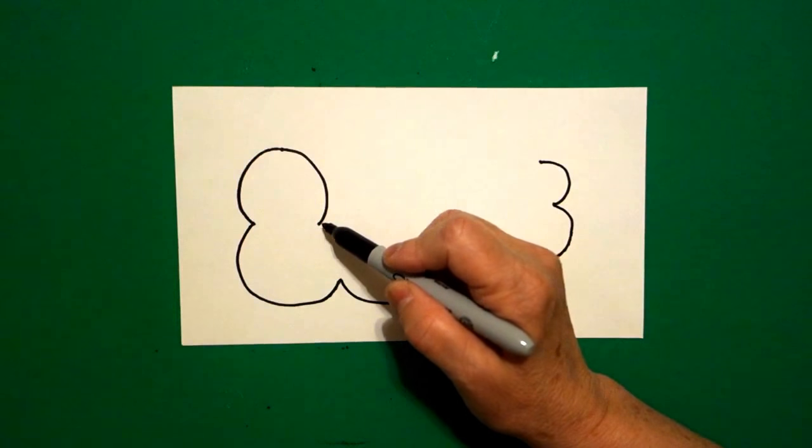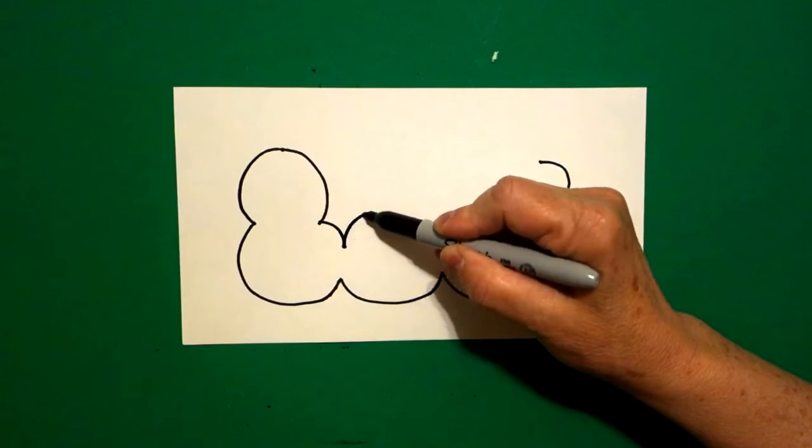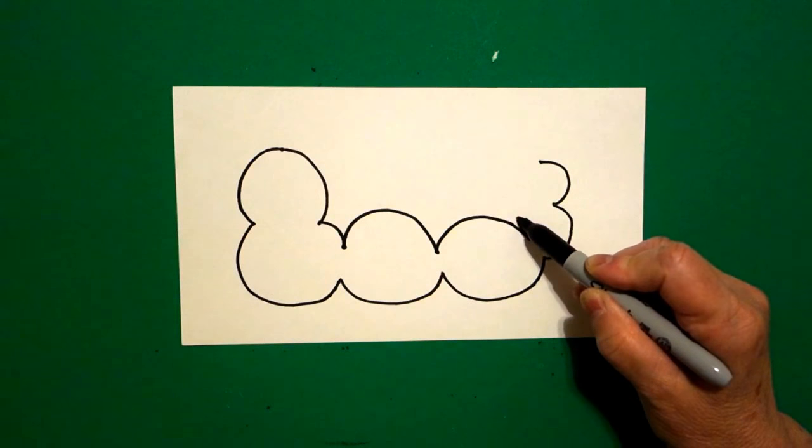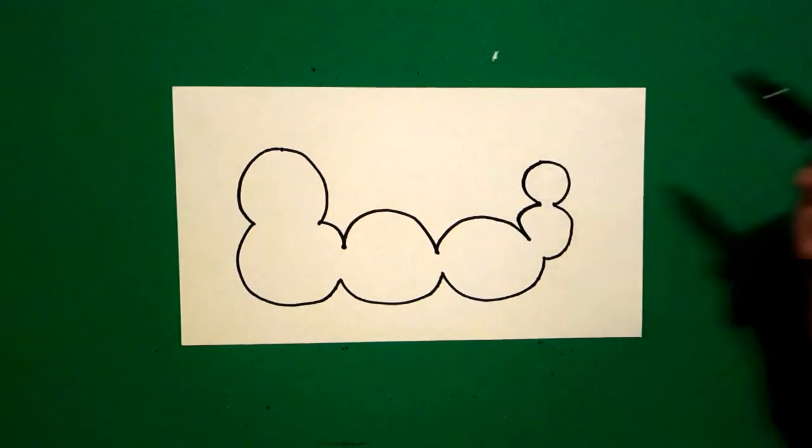Now I come back to this section right here and I draw a curved line down, curved line down, curved line over, curved line up, curved line connect.